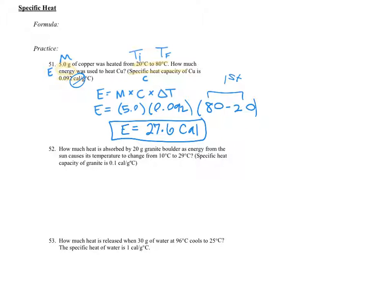Okay, we move on to the next one. How much heat is absorbed? Remember I told you, when they talk about heat, they also mean it as energy. Heat and energy are synonymous here. By 20 grams of granite, as energy from the sun causes its temperature to change from 10 degrees to 29 degrees, the specific heat of granite is 0.1. So again, it says how much heat, that is the E. 20 grams is your mass.